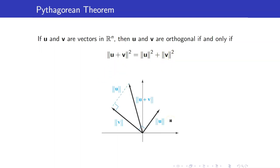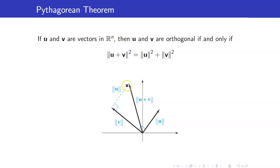Here is a picture of two orthogonal vectors u and v, and the length of the sum of the two vectors. This length will be equal to the norm of u squared plus the norm of v squared.